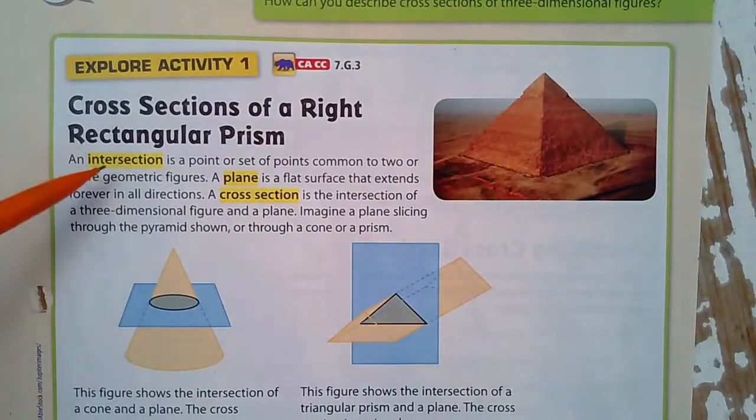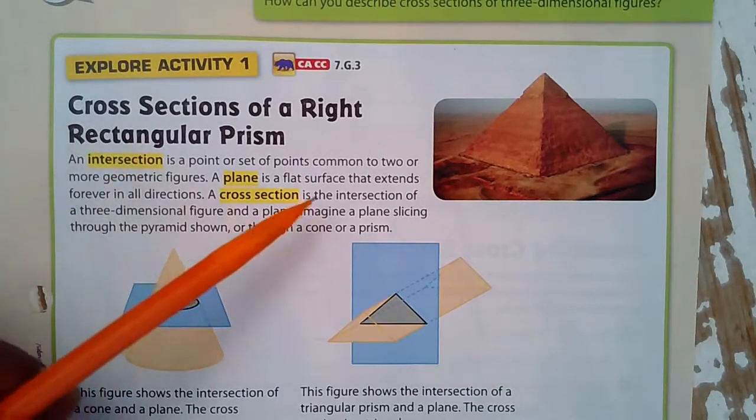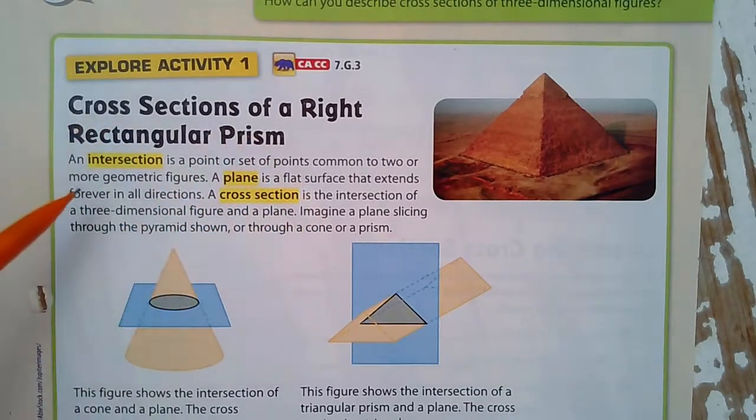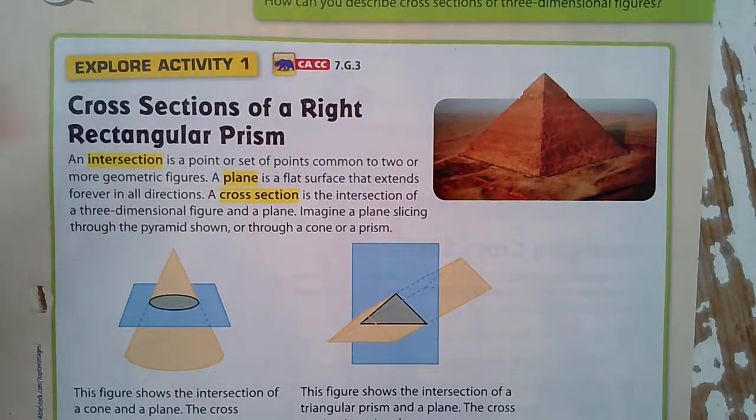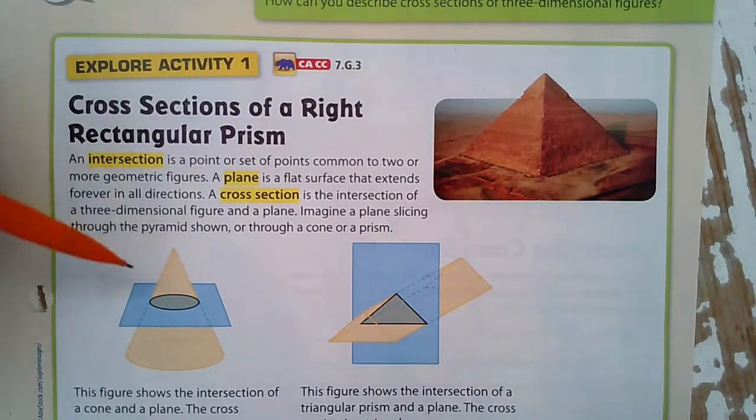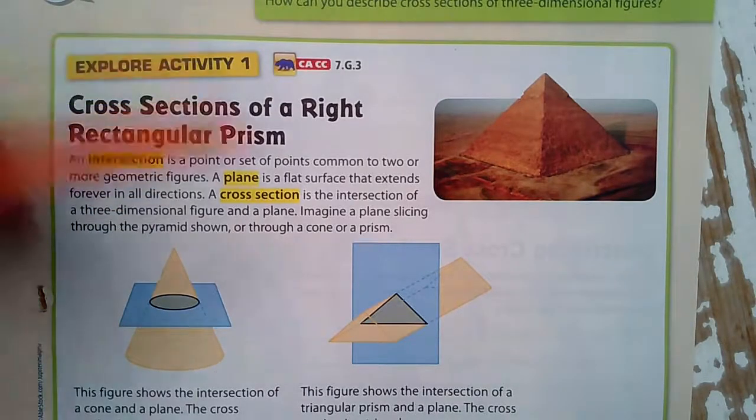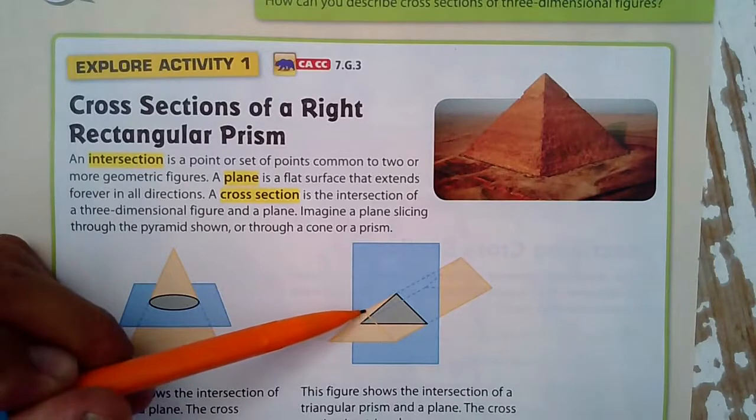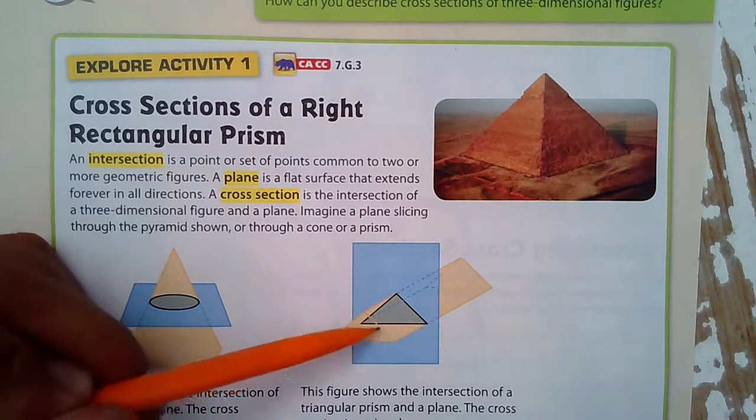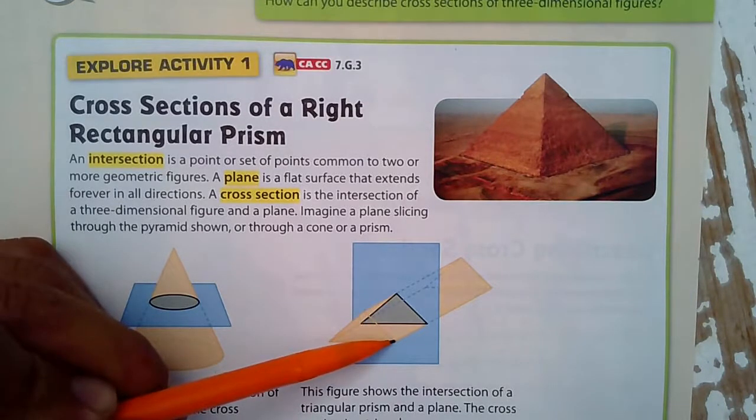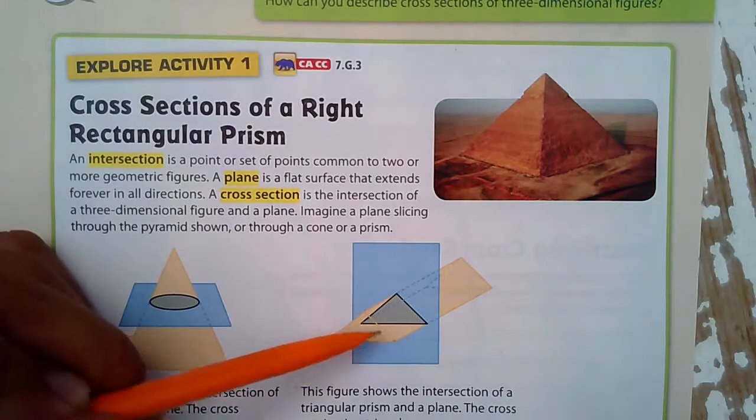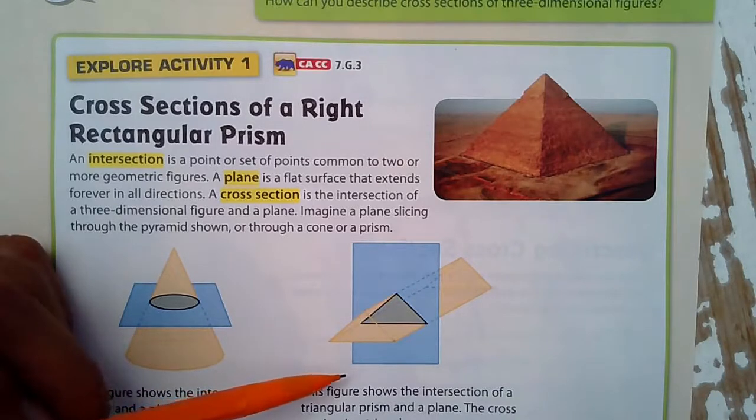We have an intersection, that is a point or set of points common to two or more geometric figures. So an intersection would be right here. I have an intersection right there, or it's probably easier to see at this point here. It's where two or more geometric figures meet.